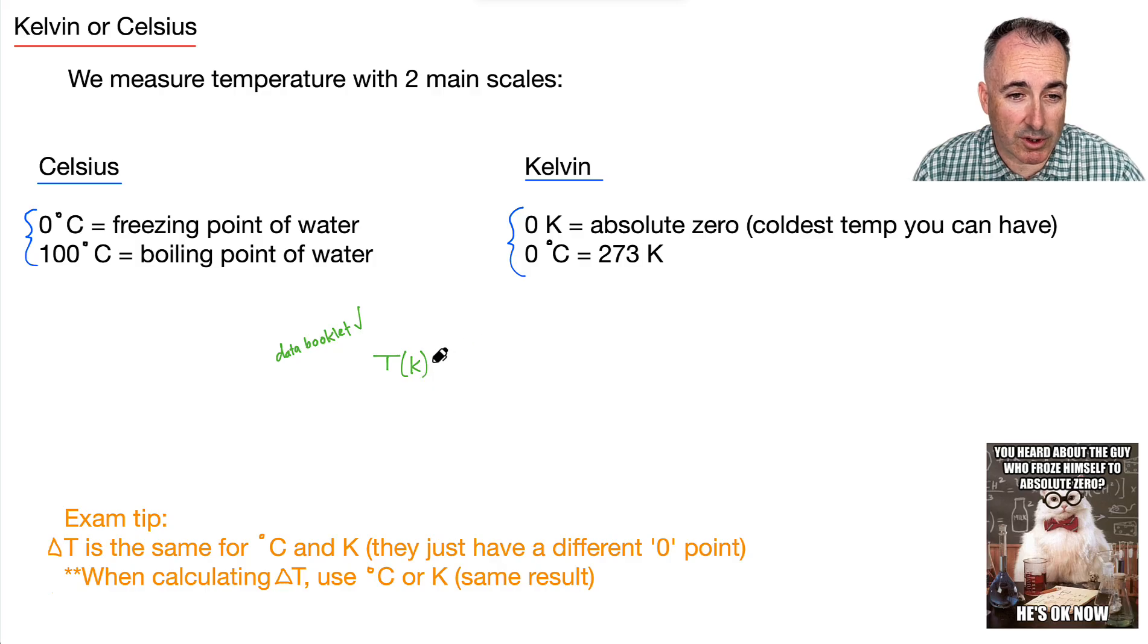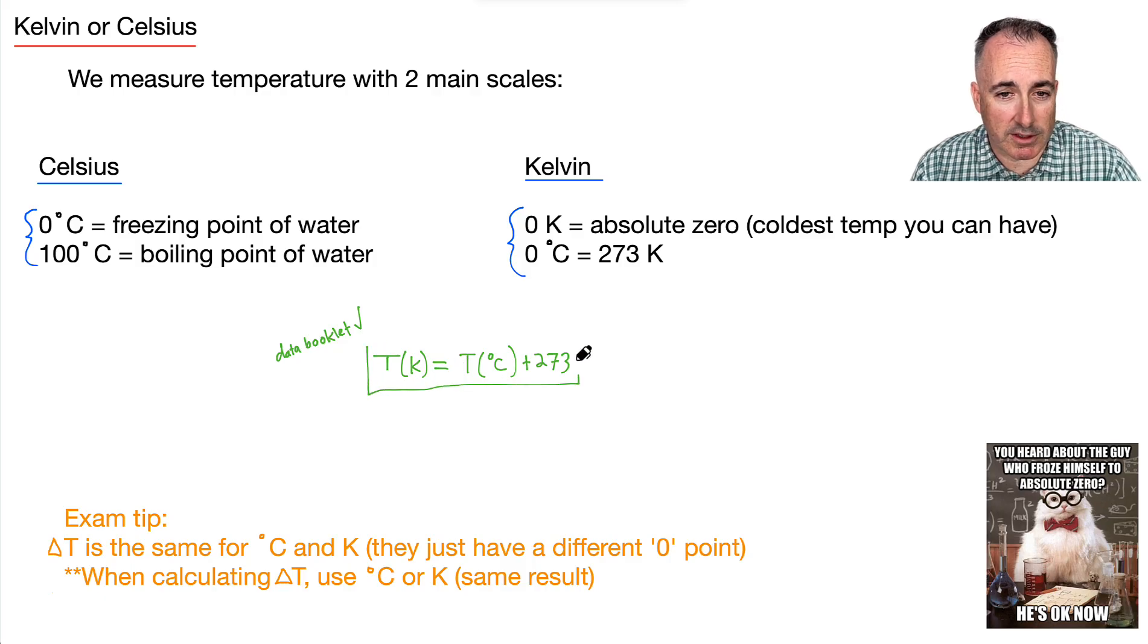It's in your data book that you don't have to memorize it. And it tells you how to find the temperature in Kelvin. This is early on in your data book, actually. So it's not in the topic where you think it should be. It's actually near the beginning. But it says temperature in Kelvin is equal to temperature in degrees Celsius plus 273. And this, again, you don't have to memorize it. So that's great.